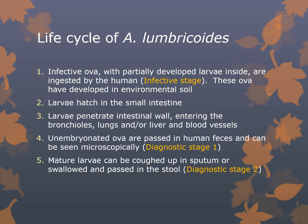In the life cycle of Ascaris lumbricoides, the infective ova with partially developed larvae inside are ingested by the human — that's the infective stage. The ova develop in the environment or soil, and we are infected by hand-to-mouth contact or by eating unwashed or raw vegetables or contaminated water. The larvae hatch in the small intestine, then penetrate the intestinal wall, entering the bronchioles, lungs, liver, or blood vessels. Unembryonated ova passed in human feces are the first diagnostic stage. The second diagnostic stage is finding mature larvae coughed up in sputum or swallowed and passed in stool.